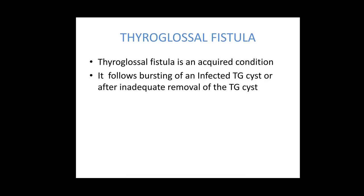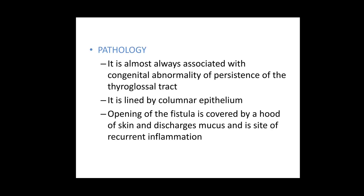Moving on to thyroglossal fistula — unlike a branchial cyst and branchial fistula, a thyroglossal fistula is usually an acquired condition. It follows bursting of an infected thyroglossal cyst, post-incision and drainage, or after inadequate removal of the cyst. In all these cases, there may be an external opening discharging pus or serosanguinous fluid. It is associated with persistence of the thyroglossal tract, is lined by columnar epithelium, and the opening is characteristically covered by a hood of skin — known as the hood sign — with continuous or intermittent discharge of mucus.